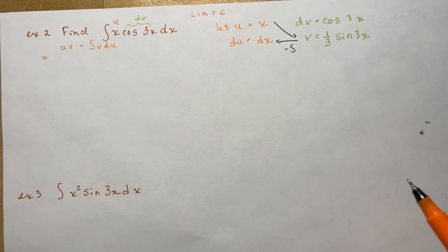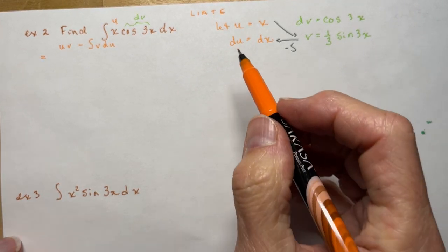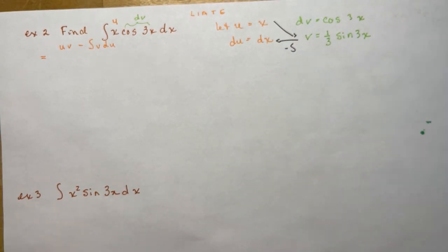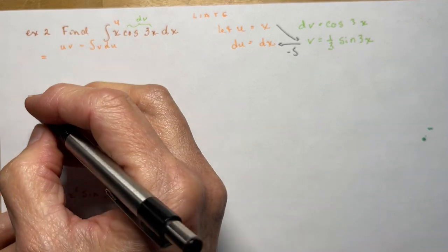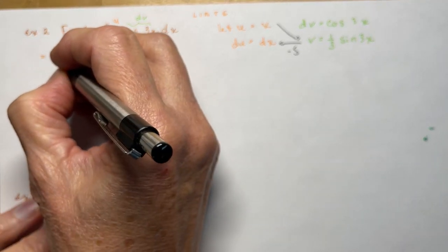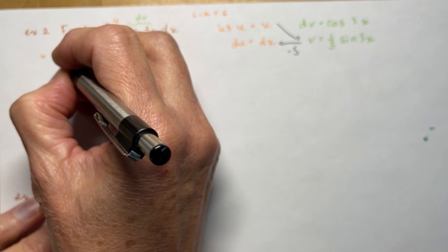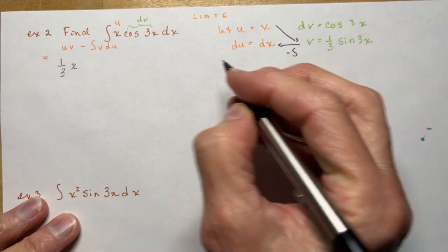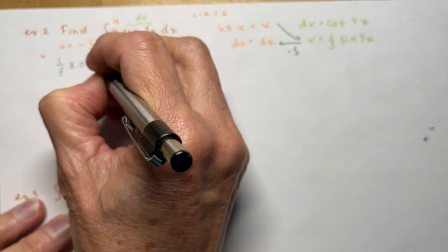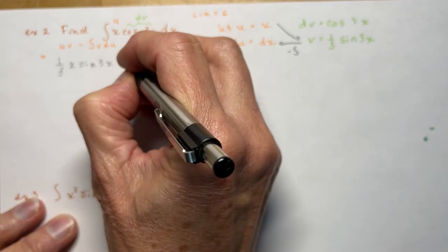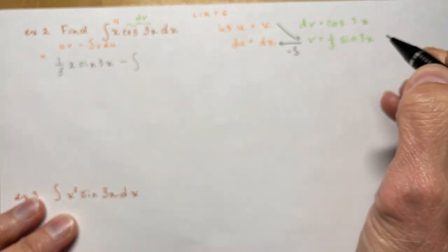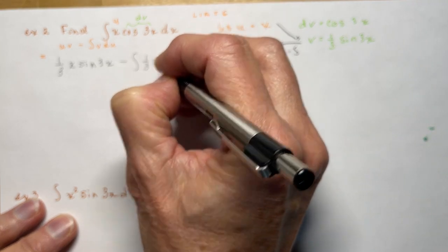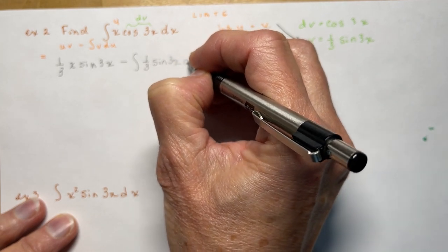So I'm going to do u times v — that's this times this — so that's going to be (1/3)x·sin(3x). I'm just simplifying as I write it out. That's my uv, now minus the integral of v·du, so minus the integral of (1/3)sin(3x)dx.